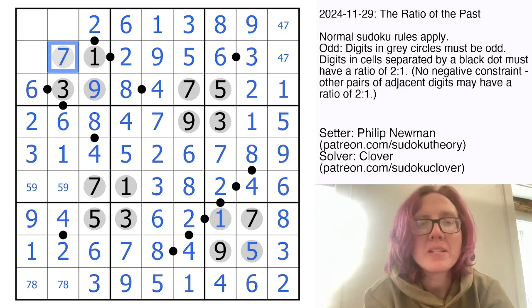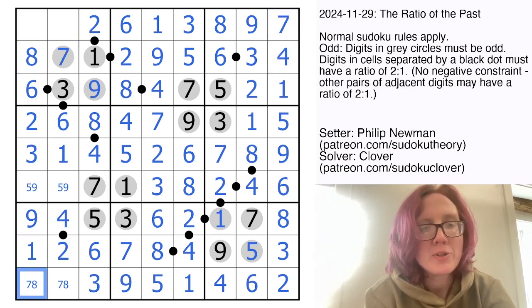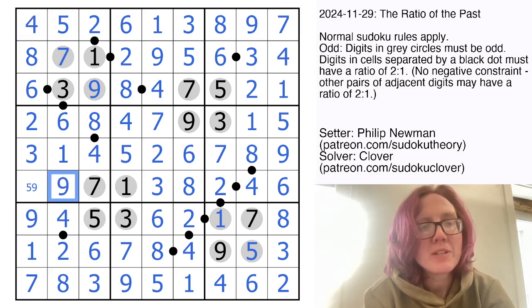The 5 in row 2 makes that a 7. That's now a 4 and 7. My last digit here is an 8, which resolves my 7, 8 pair. And now I'm going to need a 4 and a 5 to finish that region.